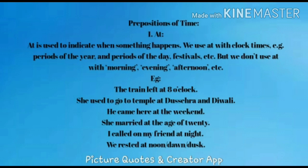'She used to go to temple at Dasra and Diwali' — here a particular festival is mentioned. 'He came here at the weekend' — before that specific time, 'at' is used. 'She married at the age of 20' — to show a particular time, 'at' is used before age. 'I called on my friend at night' — we must use 'at' before night. 'We rested at noon, dawn, dusk' — before these time words like noon, dawn, dusk, we also use 'at.'